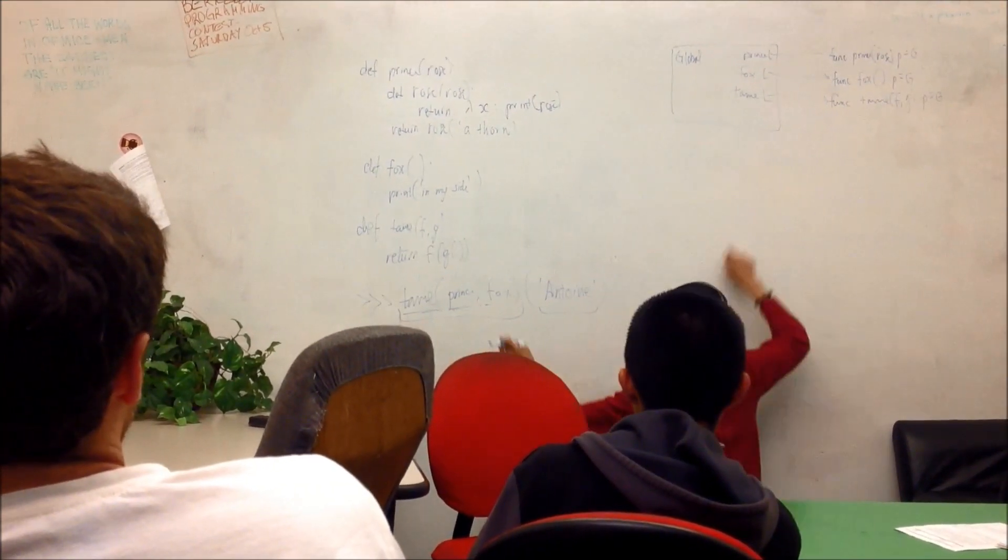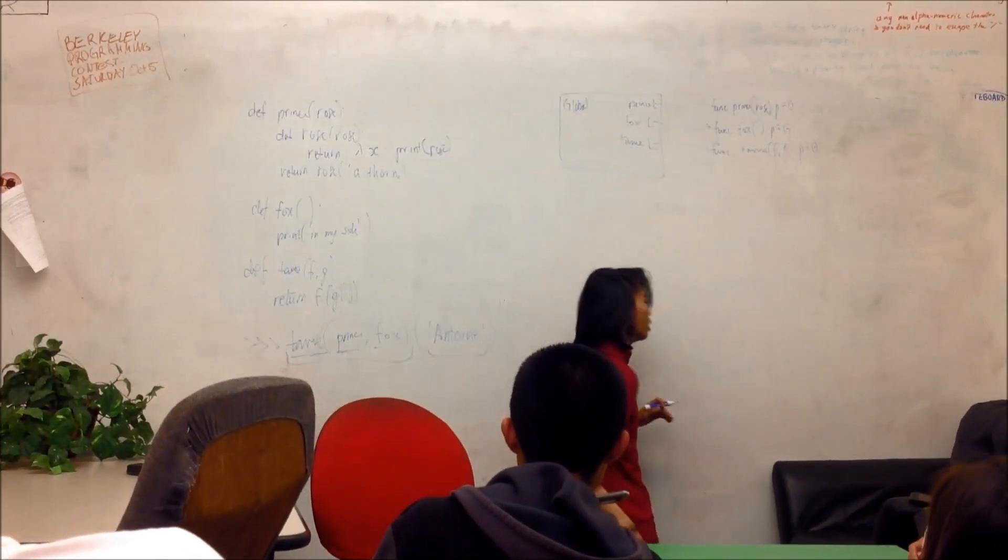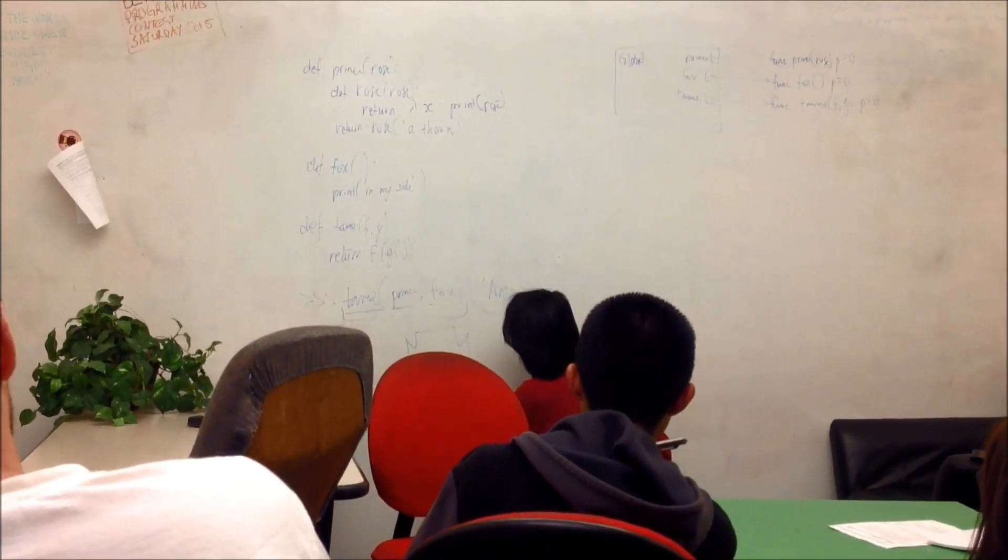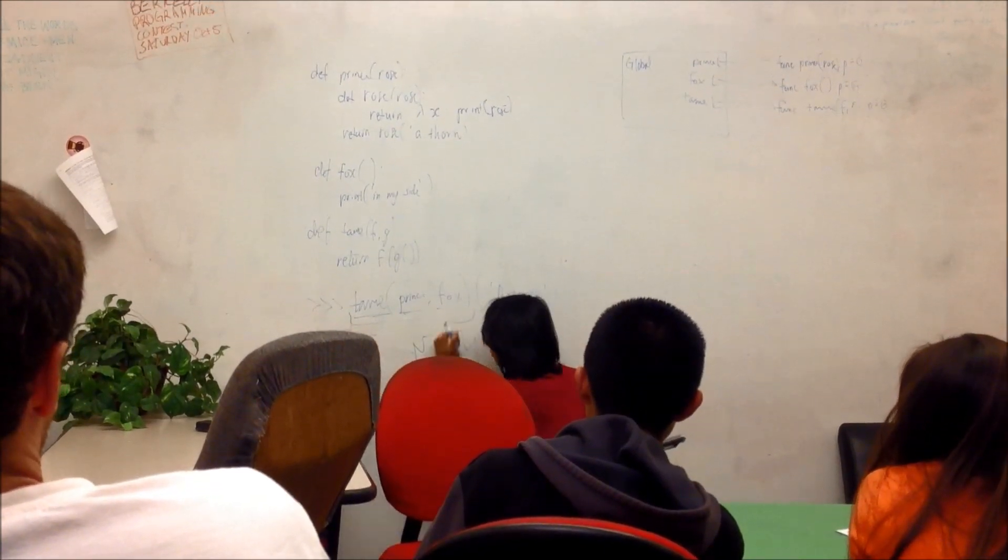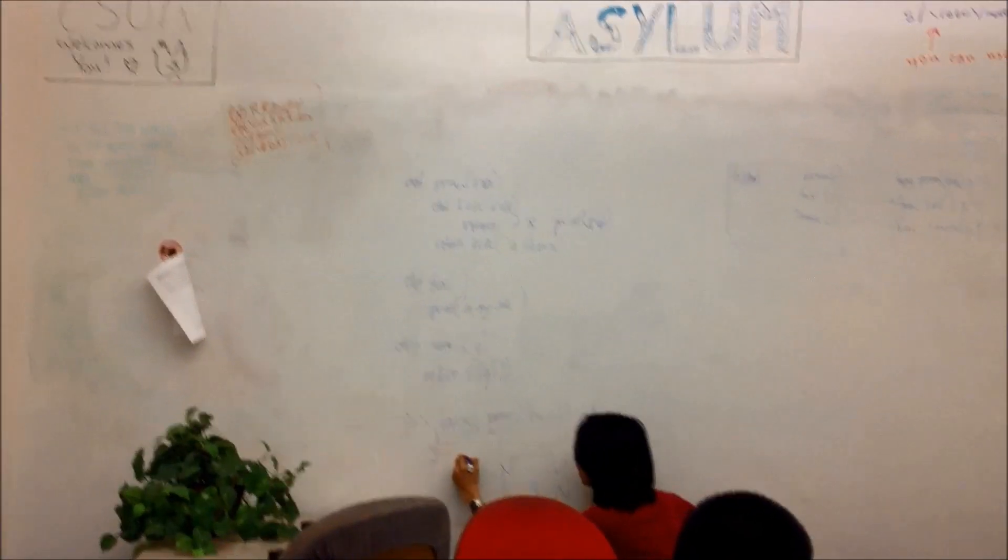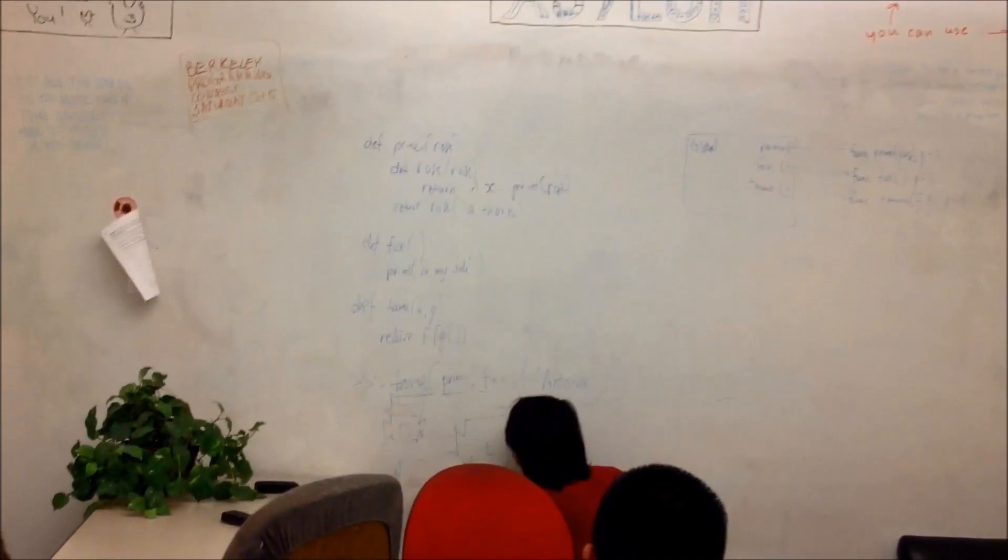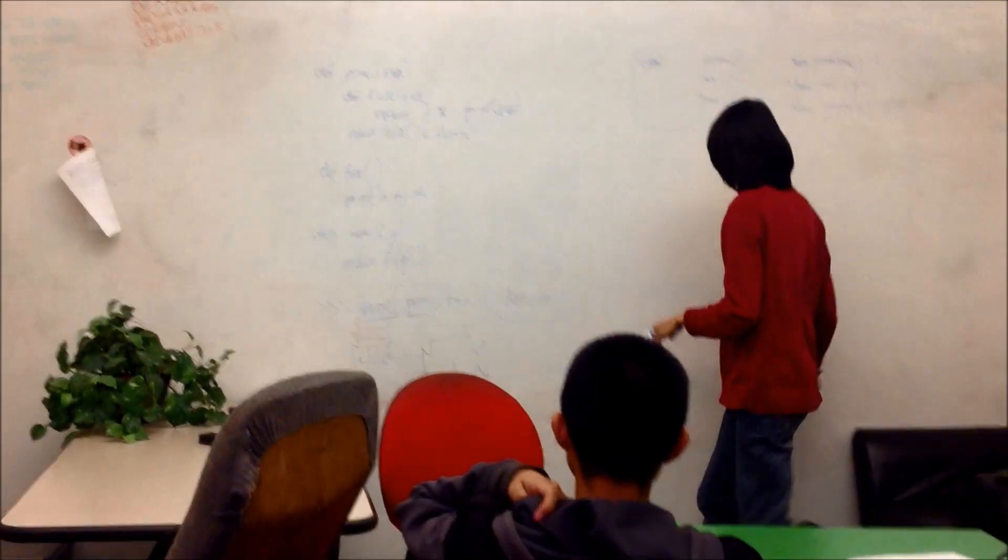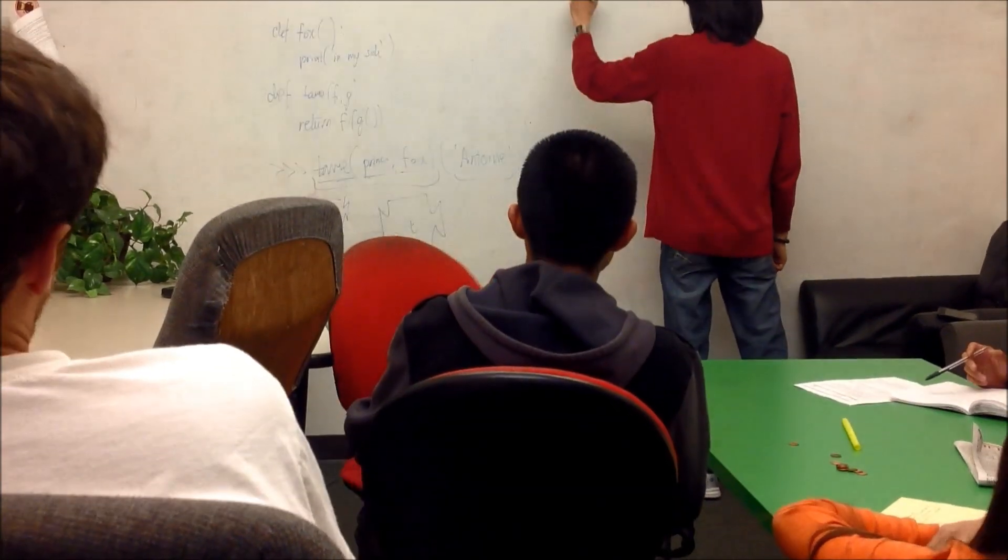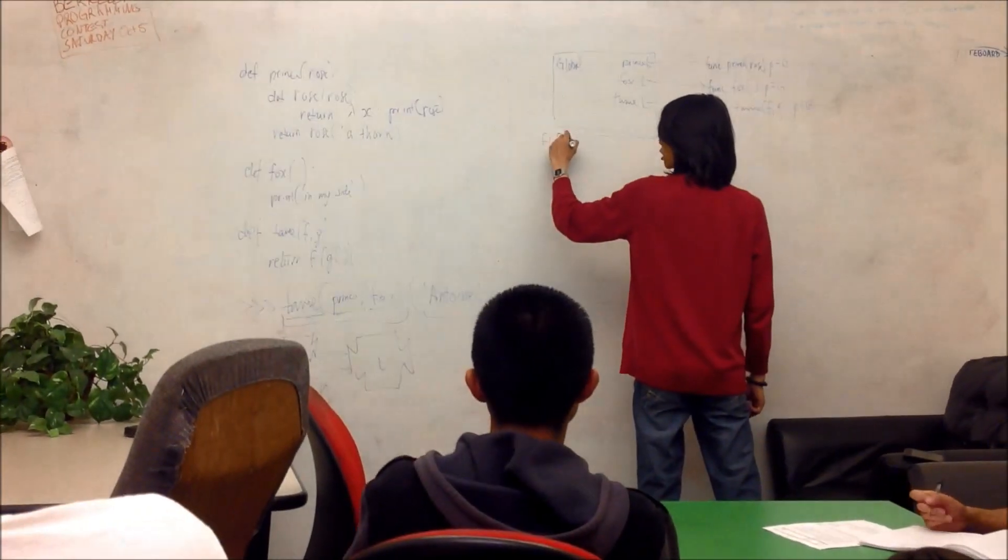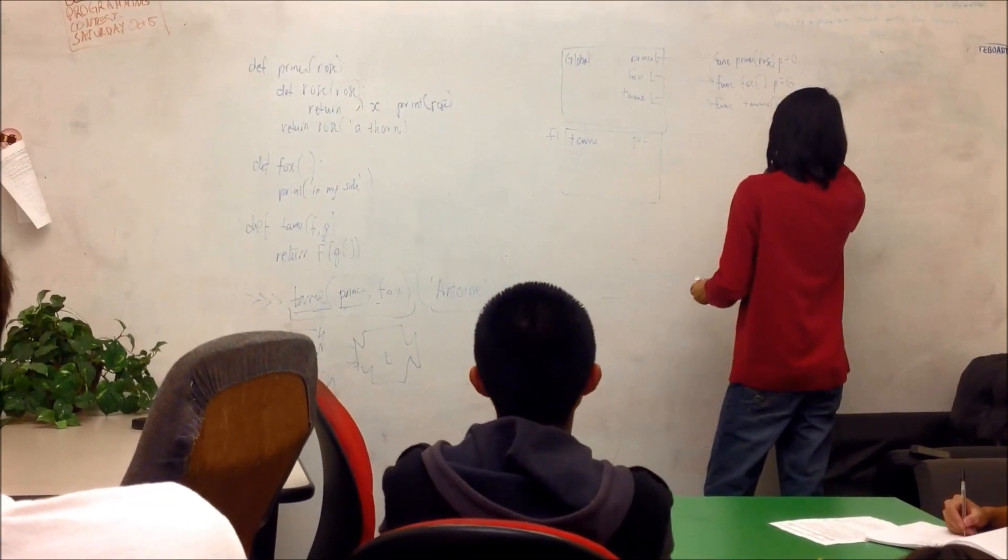So we figure out that tame actually is this function up there. Prince is actually that function and fox is that function. So we have one function being passed two other functions. This isn't part of the environment diagram, but this is how I would visualize it. Tame is taking in two procedures, prince and fox. And then I get to create a new frame because I've evaluated the operator and the operands. I call it F1, and I know I called tame in order to create this frame. Its parent is whatever tame's parent is, which is global.